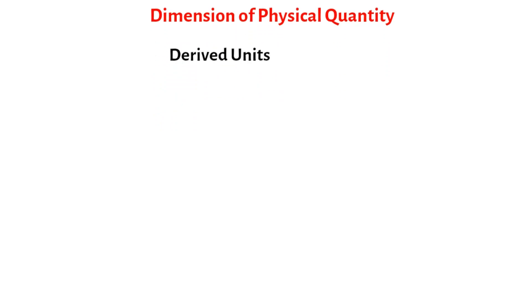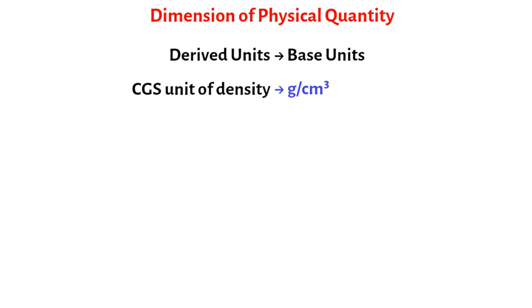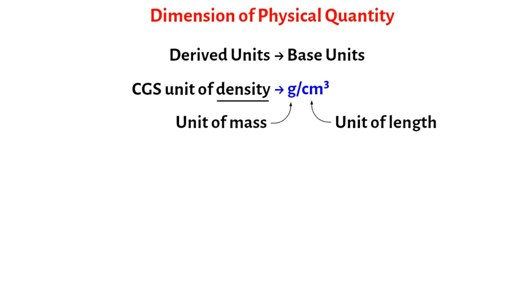Dimension of Physical Quantity. We know that derived units are such units that depend on base units. For example, if we take the CGS unit of density, which is gram per centimeter cube, then it is very easy to understand how the unit of density depends on the unit of length, centimeter, and the unit of mass, gram.